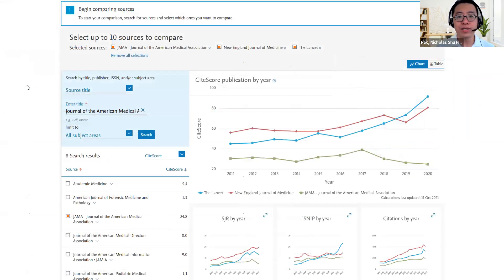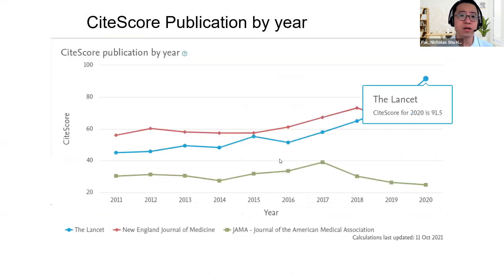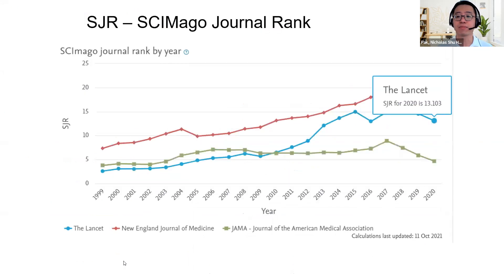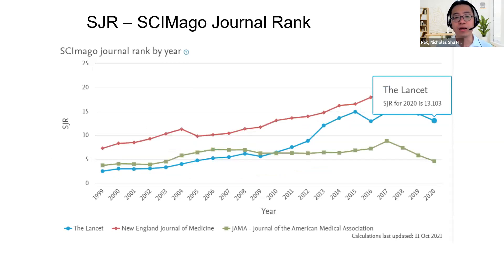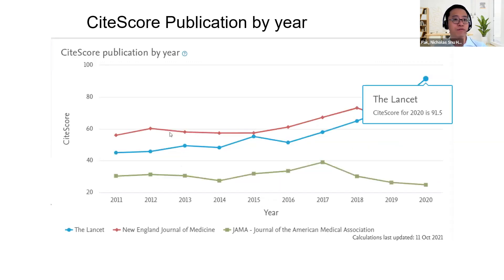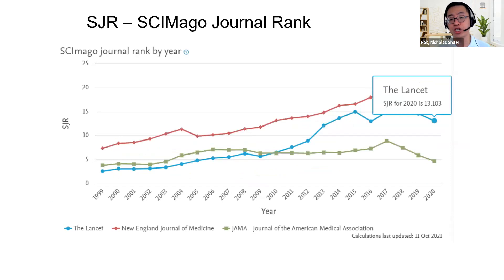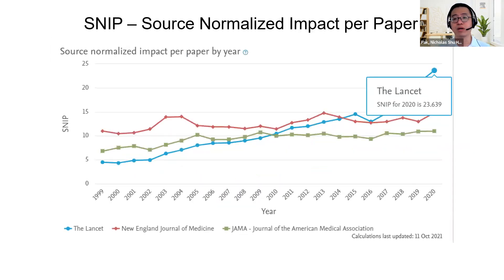I always encourage you to compare three different journal sources to understand how they perform relative to one another. If I take a look at CiteScore, I see Lancet performing very well, followed by New England Journal of Medicine and then JAMA. When we look at SCImago, the performance is also a bit different because the way they calculate is different. This is where you make your own comparison, because we don't want to extol the virtues of just one type of metric. Different metrics serve different purposes — SJR tracks in terms of a prestige calculation, SNIP tracks from a field-weighted perspective.